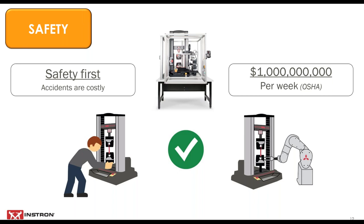And that's just the direct payments, so think about how much other disruption comes along with that. When you start to integrate solutions like automatic extensometry or pneumatic grips with specimen stops, you're reducing an operator's exposure to potential hazards and the likelihood of a safety incident drops. Then, when a system is being run by intelligent software and a robot inside a fully enclosed work cell, operators are removed from the system entirely and the risk of a safety incident drops dramatically.